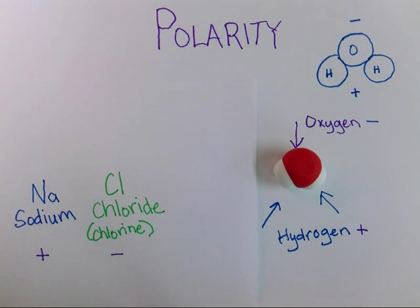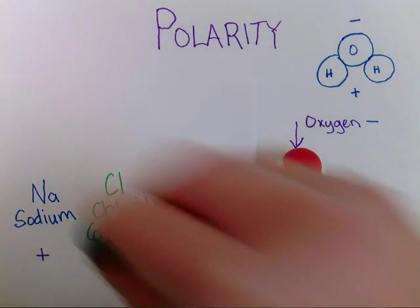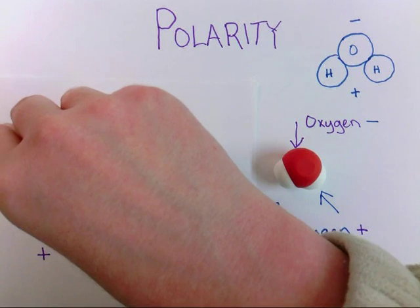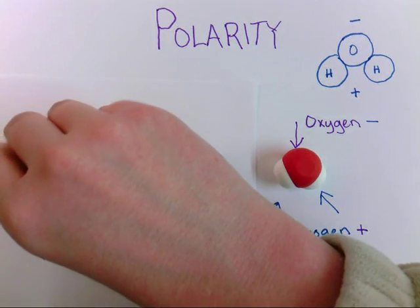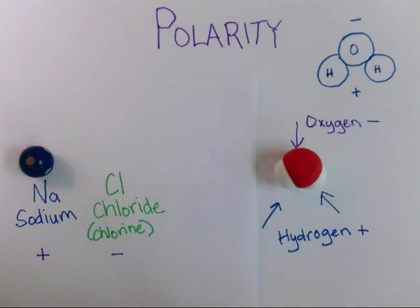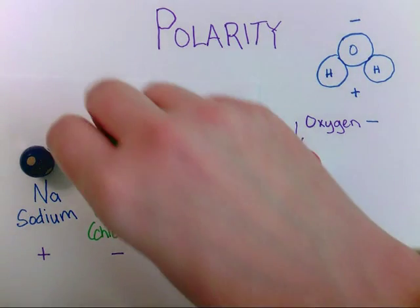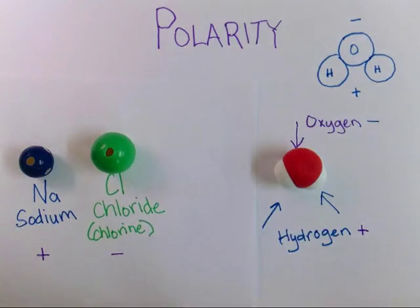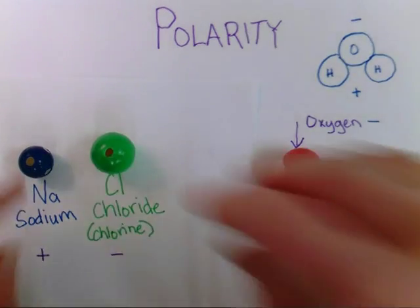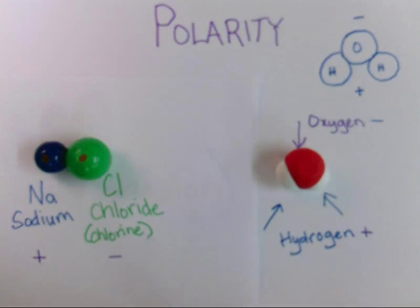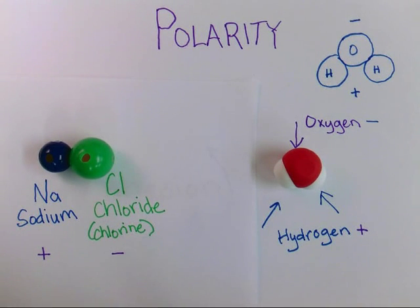Table salt is made up of two different elements. That's sodium, which has a positive charge, and chlorine, which has a negative charge. When they're stuck together like that, NaCl, they become table salt.